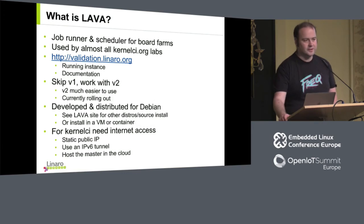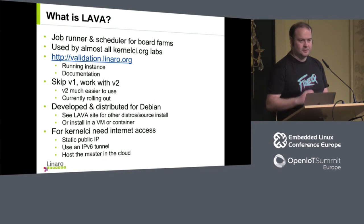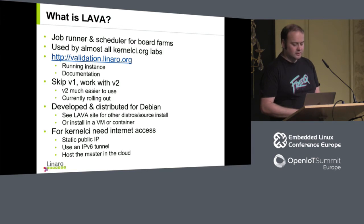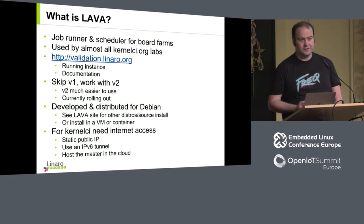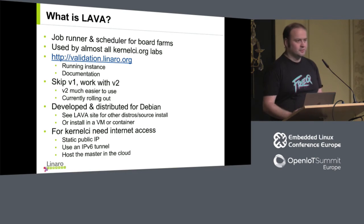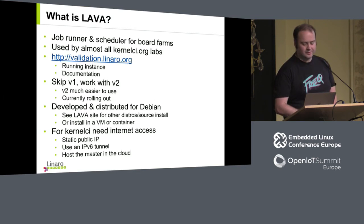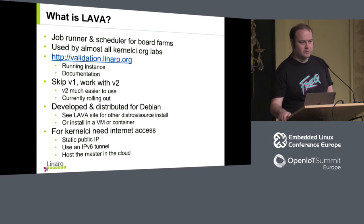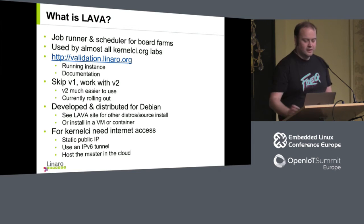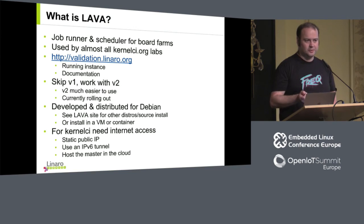One thing you'll see when you look at the LAVA documentation is that there are two versions — or two interfaces LAVA presents: a version one interface and a version two interface. Version two is just in the process of being rolled out now — it's the result of several years of experience on the part of the LAVA developers and administrators at Linaro, and it makes things a lot easier to use. I would recommend not paying too much attention to version one for new installs and moving to version two as fast as possible. Unfortunately because it is in the process of being rolled out, the documentation is sometimes a little incomplete. But the LAVA developers are generally really helpful, and if you come onto #kernel-ci on Freenode, we can try to help you out as well. I'll go through how to install LAVA and get it up and running.